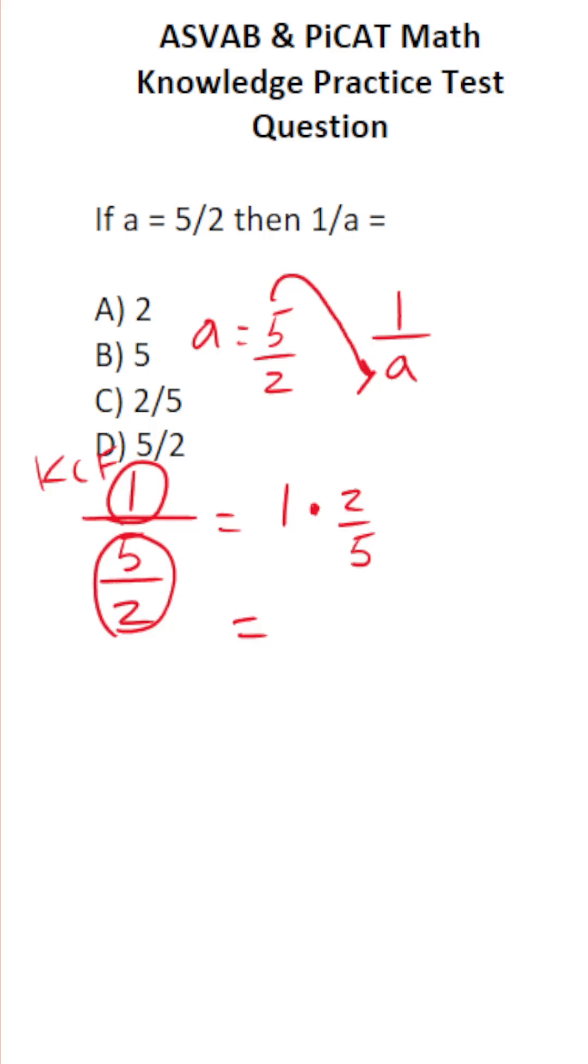1 times any number is that number itself, so 1 times 2 over 5 is just 2 over 5. So we can see that 1 over A is C, 2 over 5.